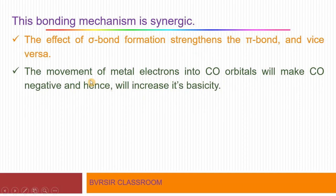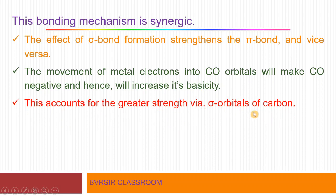Due to the backbonding concept, metal electrons move into the CO orbitals, which makes CO more negative. When CO becomes negative due to increased electron density, its basic character increases — that is, its ability to donate an electron pair increases. This accounts for the greater strength of the sigma orbitals of carbon monoxide, because CO's capacity to donate electrons to the metal increases, which in turn strengthens the sigma bond.